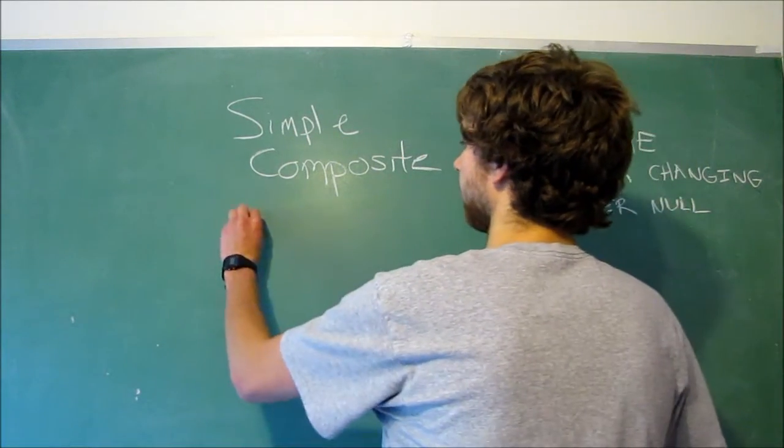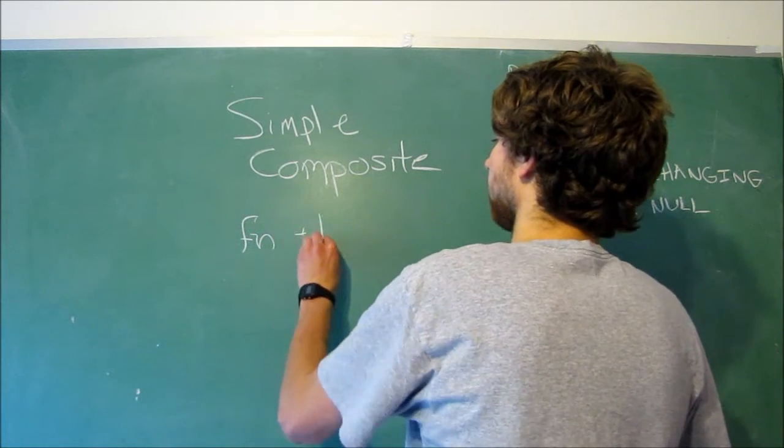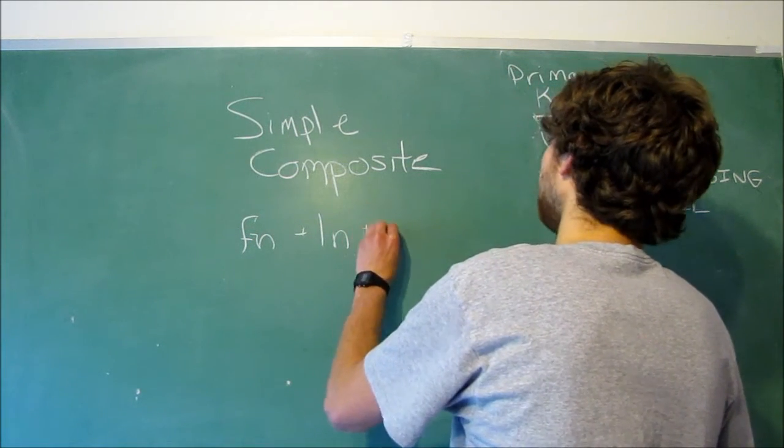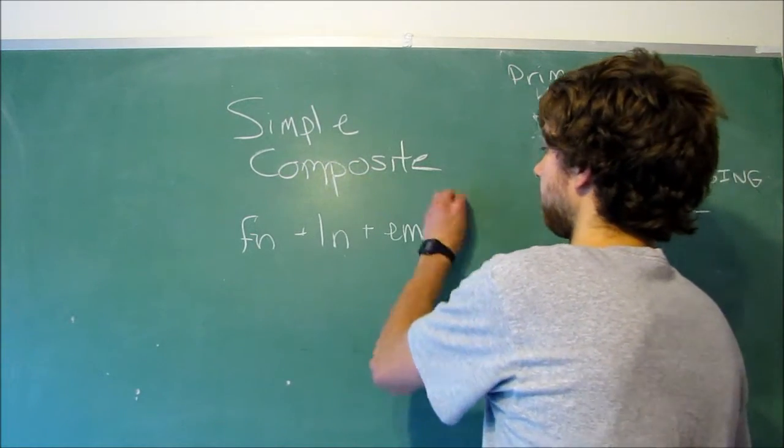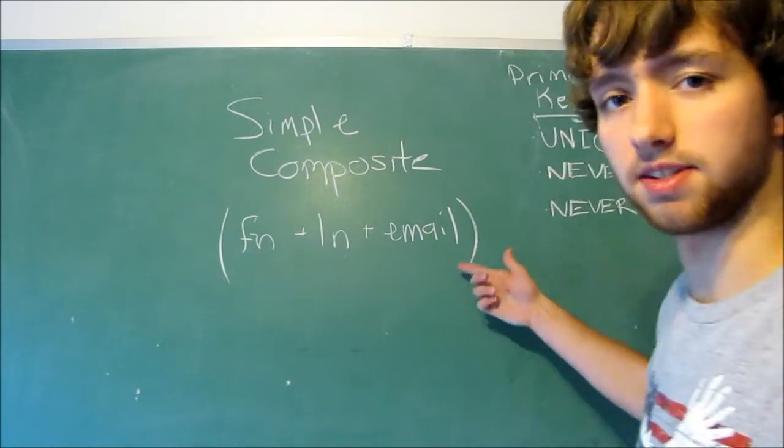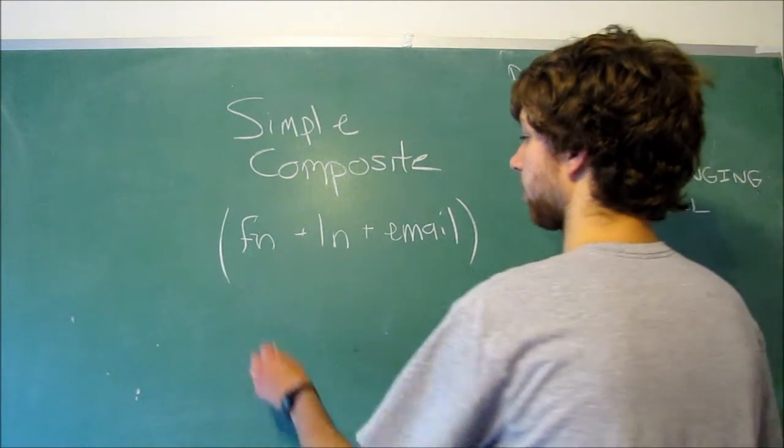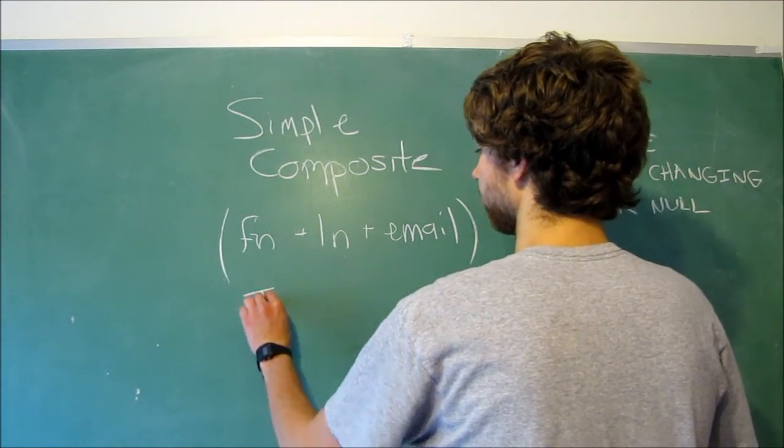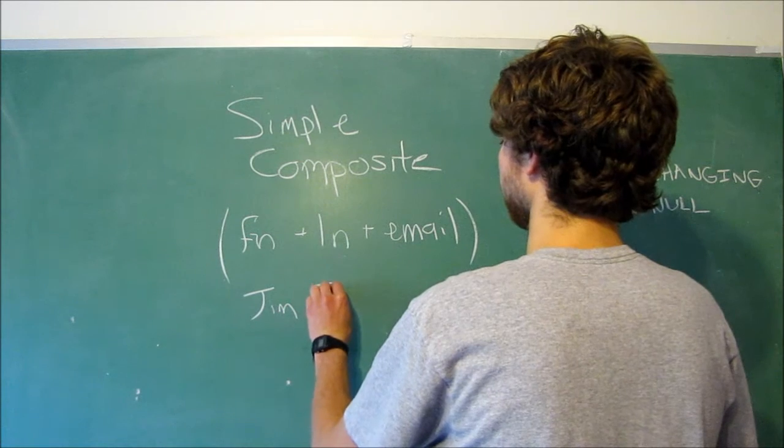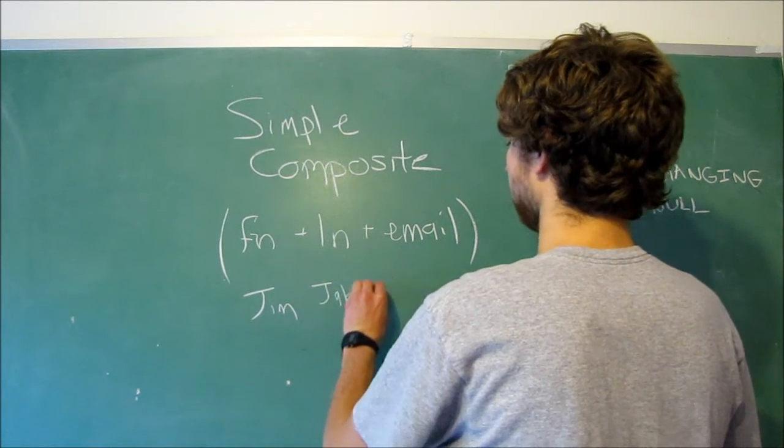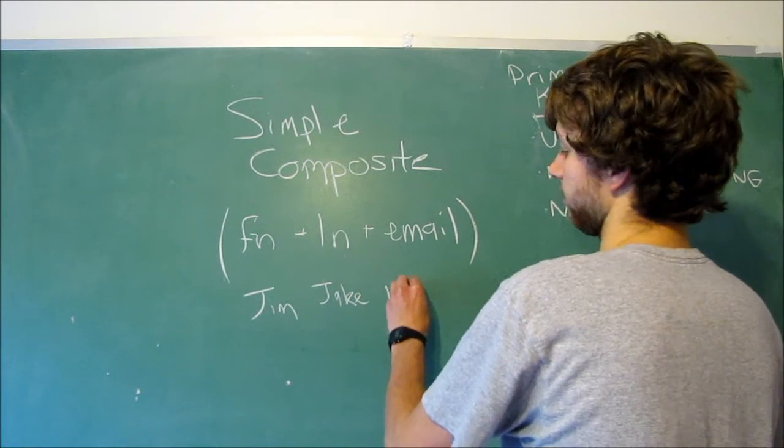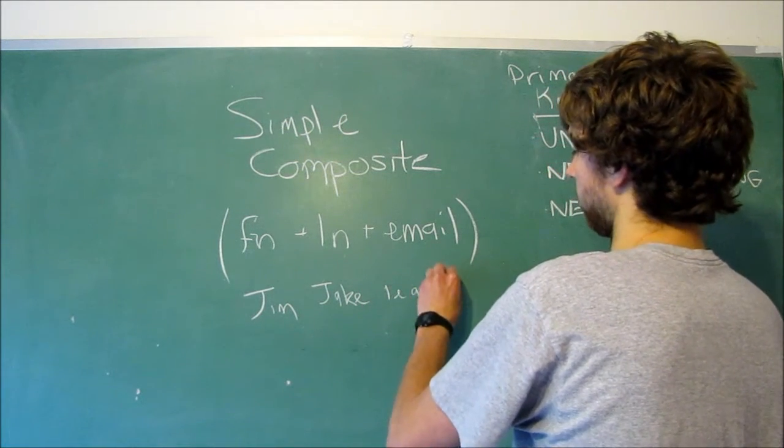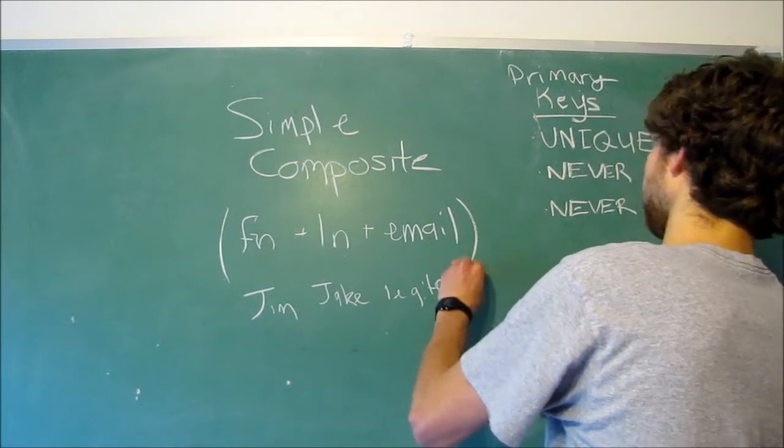So for example, we could have a first name plus last name plus email. This could be an example of a composite key, because this whole group as a whole is the primary key. So we could have Jim, Jake, and legit, or awesome, or whatever.